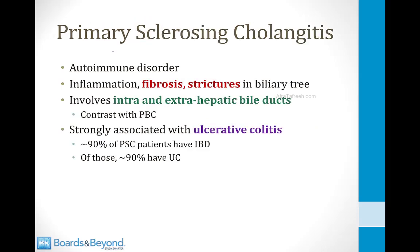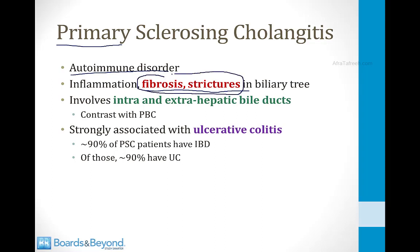Our next biliary disorder is called primary sclerosing cholangitis. Many students confuse this with primary biliary cirrhosis because both conditions are rare, both involve the biliary tree, and both have the word primary in the name. Primary sclerosing cholangitis is an autoimmune disorder, but the hallmark is inflammation, fibrosis, and strictures in the biliary tree. The biliary tree becomes stuck together and bile cannot flow. It involves both the intra- and extrahepatic bile ducts, which is different from primary biliary cirrhosis, which only involves the bile ducts inside the liver.